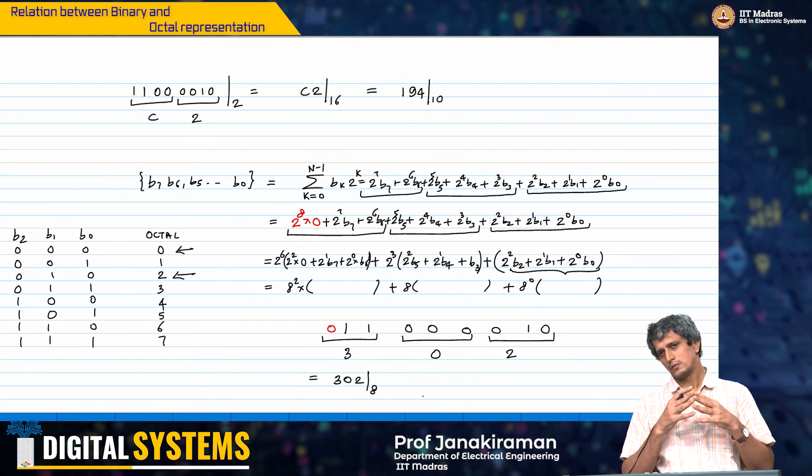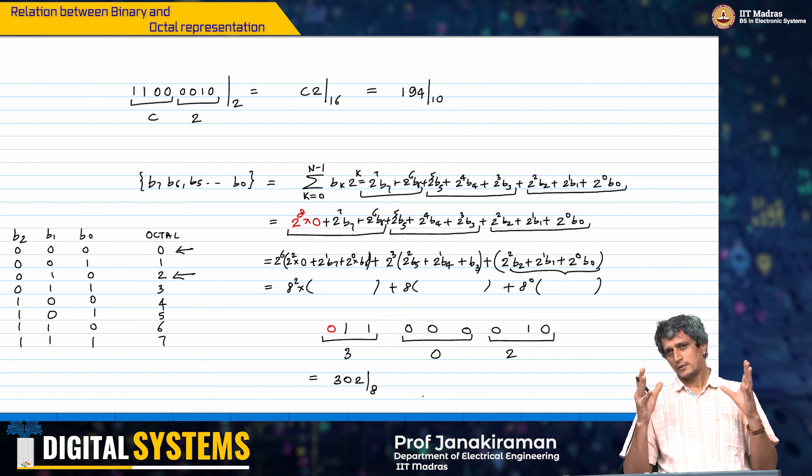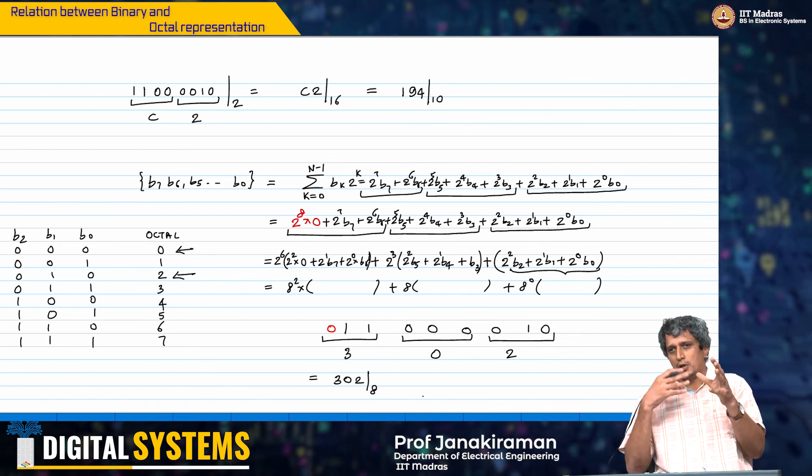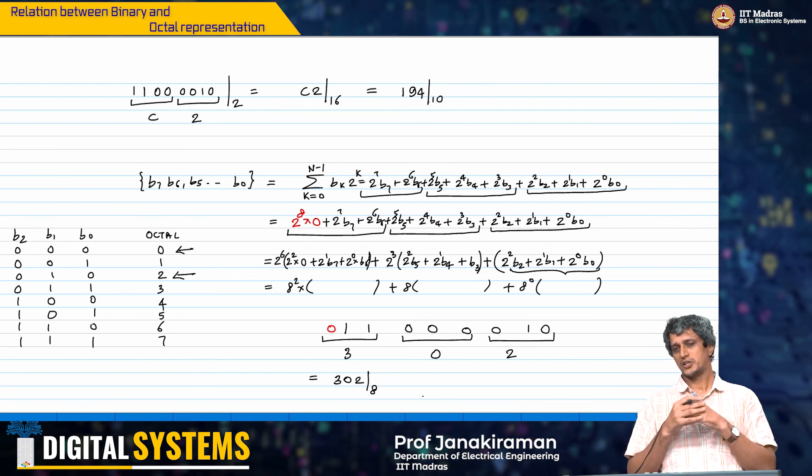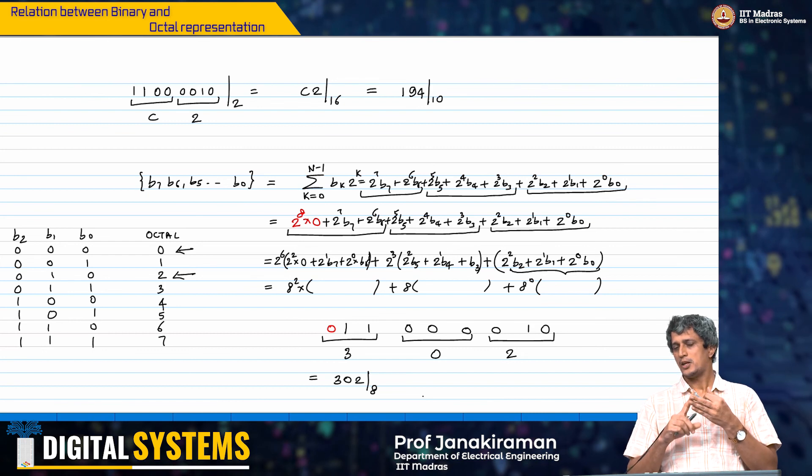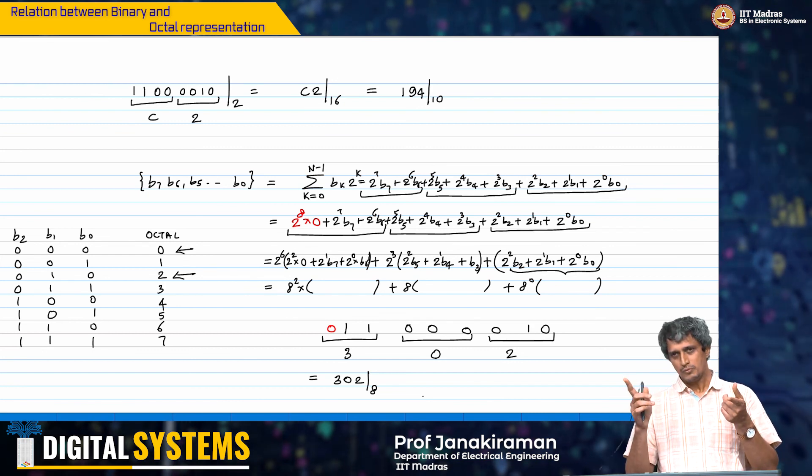Effectively, we have looked at the three important binary number system representations that are relevant to us, namely the binary, the hexadecimal, and the octal, and the inter conversion between these number systems, and also to decimal and back.